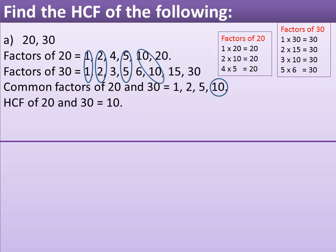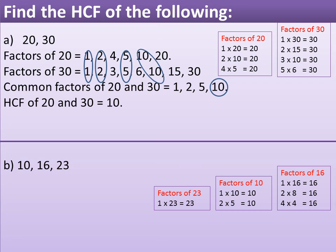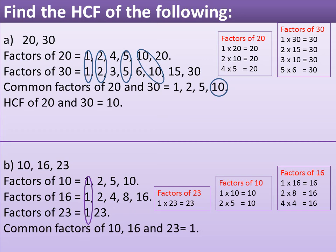Question B: Find the highest common factor of 10, 16, and 23. Step 1: Factors of 10 are 1, 2, 5, and 10. Factors of 16 are 1, 2, 4, 8, and 16. Factors of 23 are 1 and 23 only. Step 2: Common factors of 10, 16, and 23 are equal to 1. Step 3: HCF of 10, 16, and 23 is equal to 1.